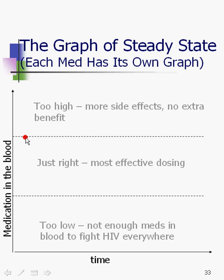This is different for every single medication. For every medication, there's a certain line where you don't get any extra benefit — you just get more side effects, extra toxicities. For every medication, there's also a line where it's not enough medication, and the HIV doesn't have enough medication to get everywhere it needs to go. So steady state concentration is about keeping it right here in the zone.